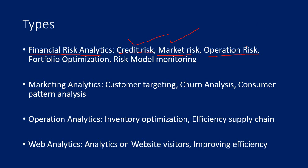The next one is operational risk. It's about doing analytics on the day-to-day operations of banks or financial organizations. Potential operational issues include fraud, natural calamities like cyclones, building collapses, or riots. These are the things that come under the category of operational risk analytics.